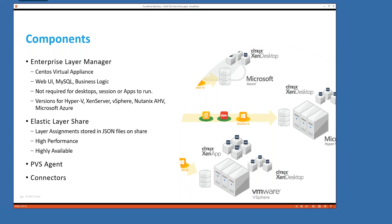A share is required for elastic layering — and in production it might be several shares or many, depending on the technologies you use. If the appliance goes down while machines are in production, it doesn't hurt anything. We store the elastic layer assignments as JSON files on the share. As long as the share is available, the layers are available — that's all you need. You can copy that share to another location as a backup. The Enterprise Layer Manager doesn't need to be highly available; it just needs to be backed up, since it's only involved when you want to make changes.